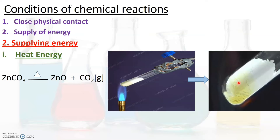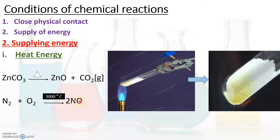Another example is the reaction of nitrogen with oxygen. Nitrogen reacts with oxygen at a very high temperature, around 3000 degrees Celsius, to give the product nitric oxide. This reaction takes place only when heat energy is supplied — that is, at 3000 degrees Celsius — producing nitric oxide as the product.